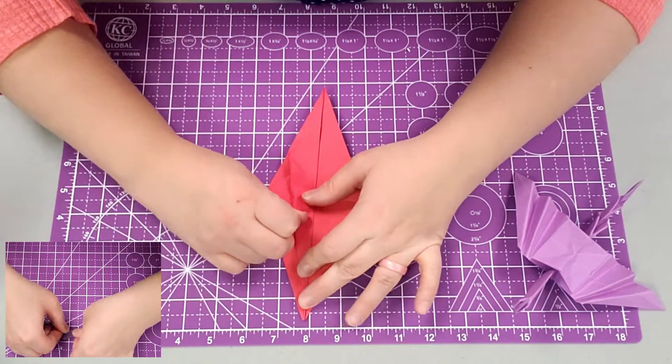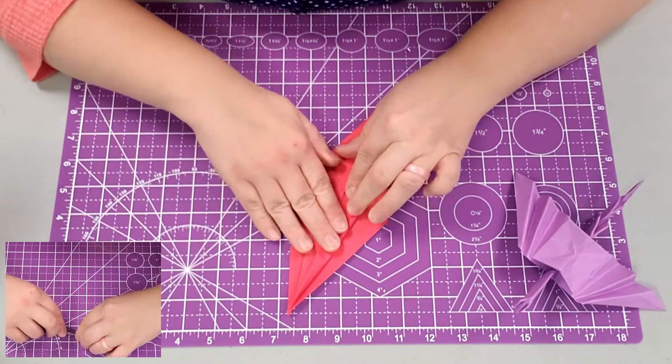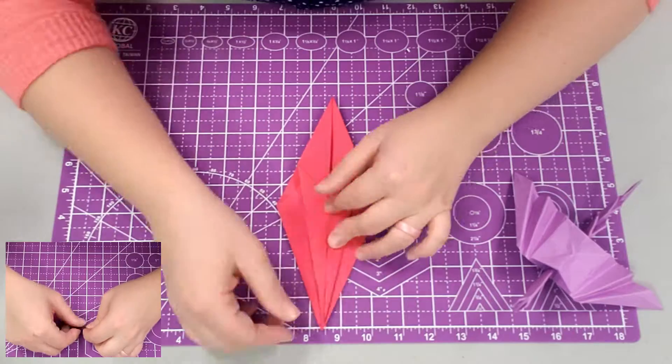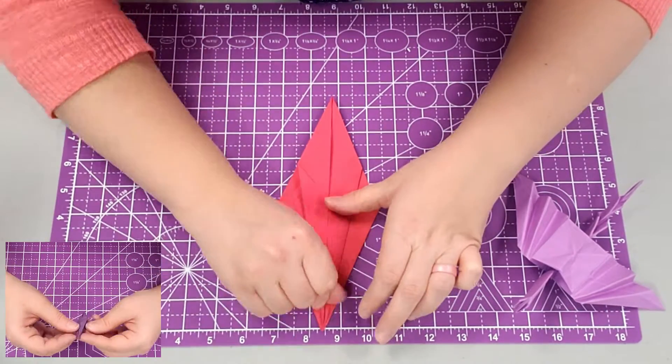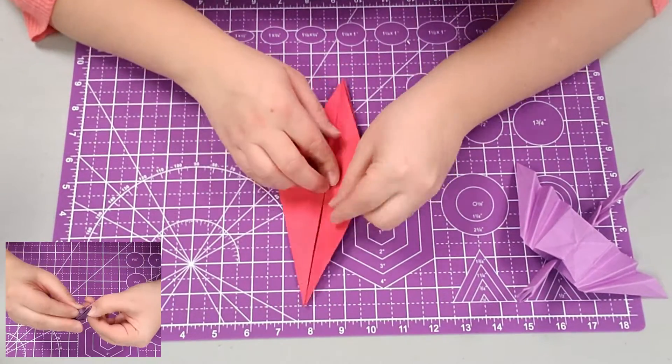So we're going to go ahead and fold this end towards the center and definitely do that slowly. Pay extra special attention to the bottom so that you can get a nice clean fold that doesn't get too crinkly and hard.